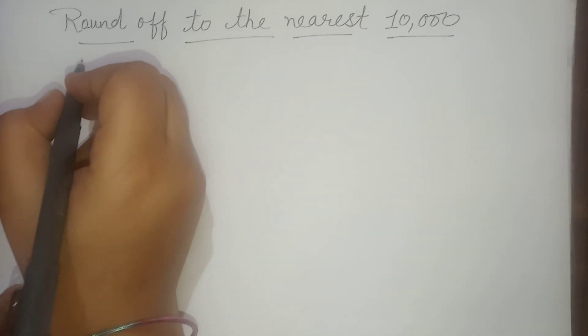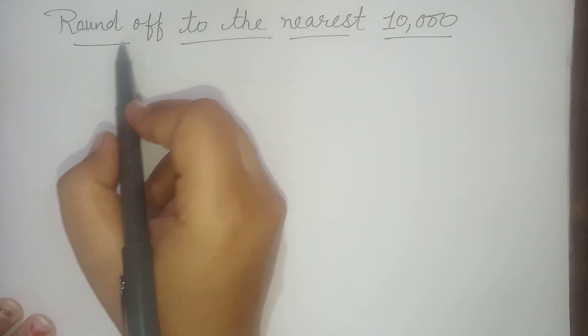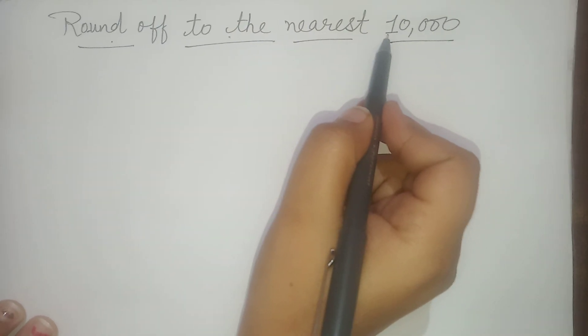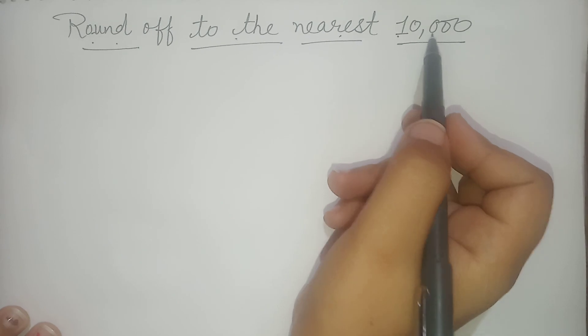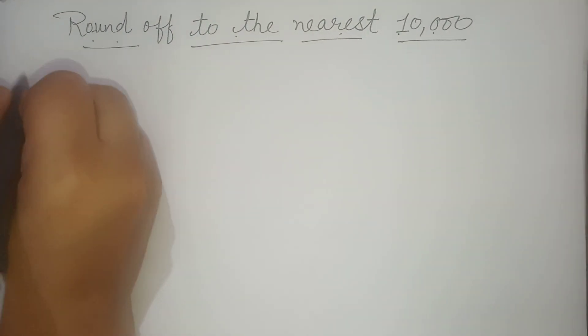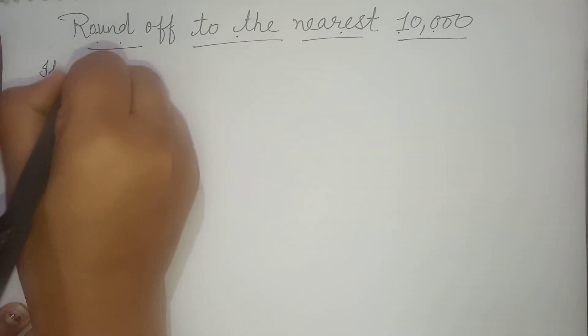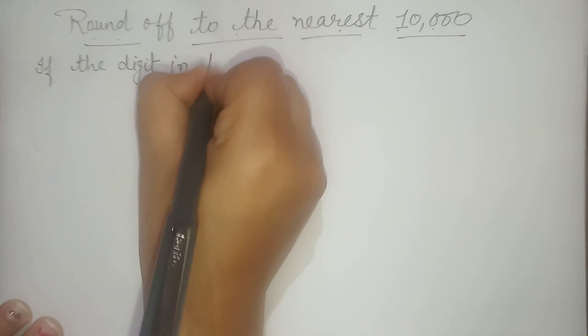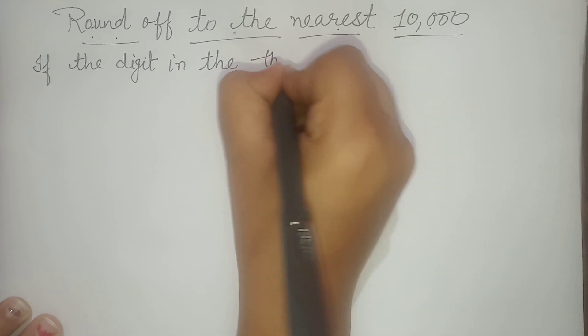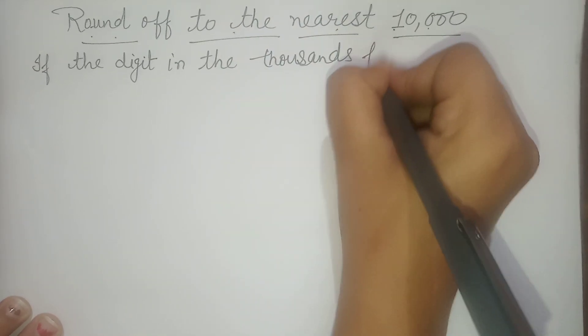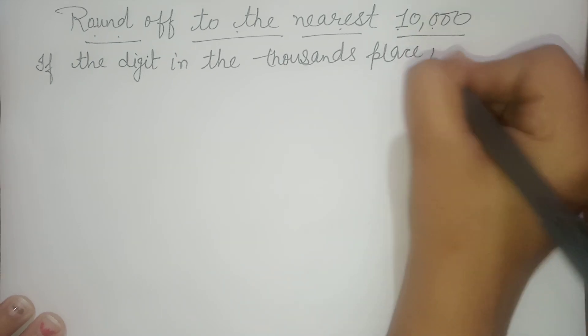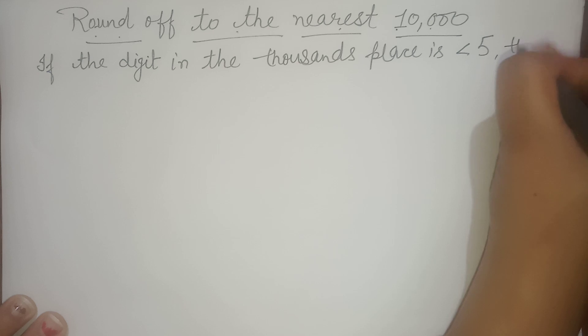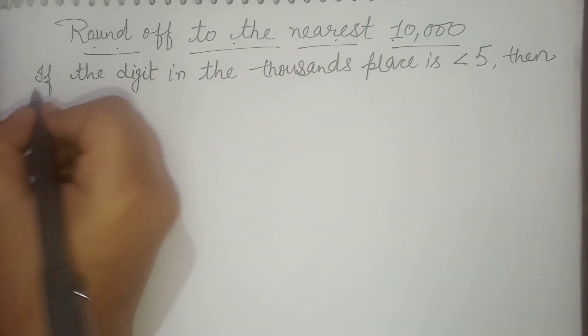Hello students, I'm Dipti and in this video I'm going to discuss rounding off to the nearest ten thousand. To round off a number to the nearest ten thousand, what we have to check? If the digit in the thousands place is less than five, then what we have to do?